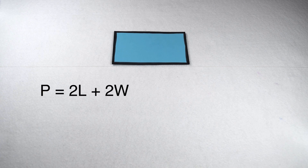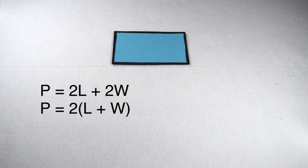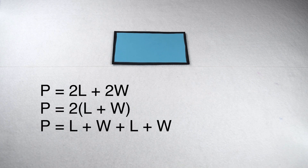If you look up how to find the perimeter of a rectangle, you can usually find several different methods, such as perimeter is twice the length plus twice the width, or perimeter is twice the sum of one length and one width, or simply perimeter is the sum of all the edges. If all of these methods work, they should all give us the same result, which is what we're going to test here today.